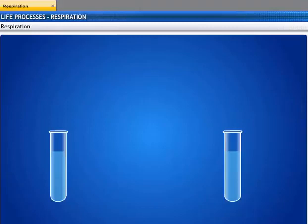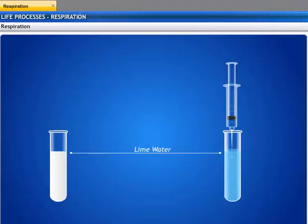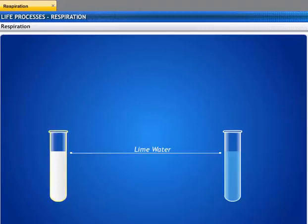Take two test tubes containing freshly prepared lime water. Blow air through the lime water in the first test tube. Use a syringe to pass air through the lime water in the second test tube. You will observe that in the first test tube, the lime water turns milky immediately, whereas it takes longer in the second test tube. This proves that air contains less carbon dioxide than the amount we breathe out.